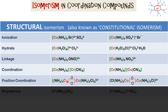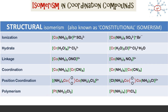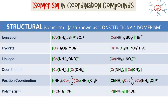In this case we have coordination compounds and these two are linked by two metal ions. This has four ammonia ligands and this has three ammonia ligands and one chlorine. This is polymerism.